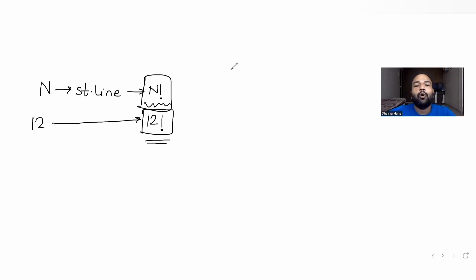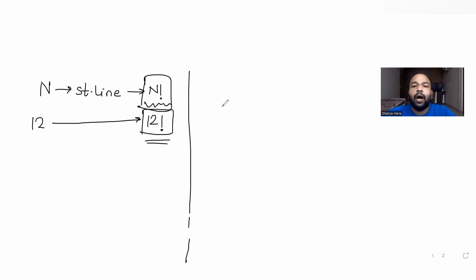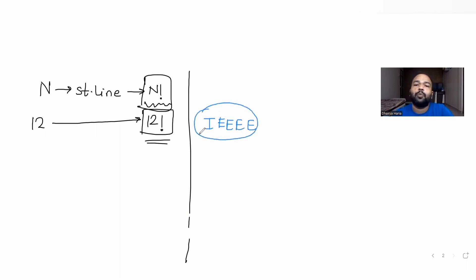Since we have the condition that vowels should always be together, let's figure out how many vowels are present in the word 'independence'. I can see i, e, e, e, and e — so four E's and one I are all the vowels. We put them in one single group.